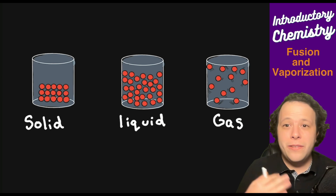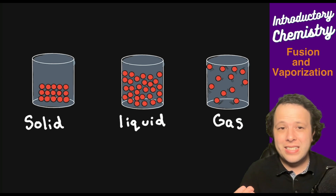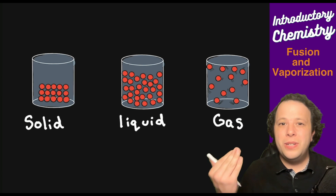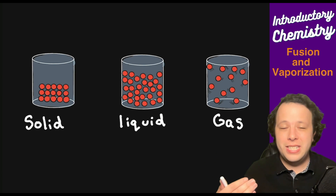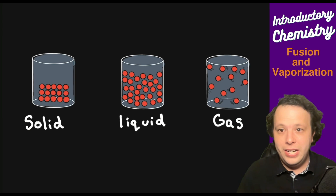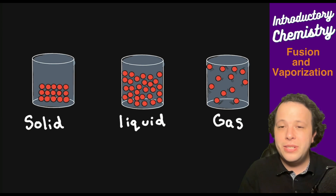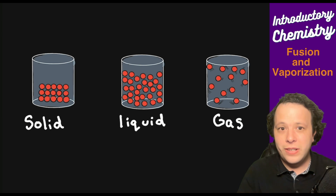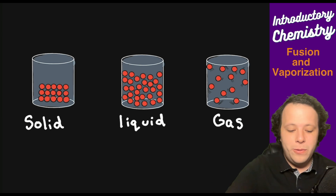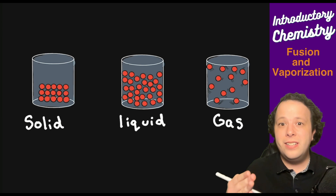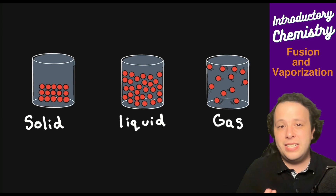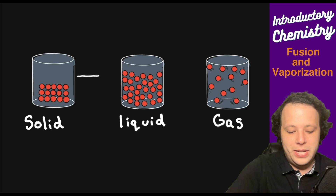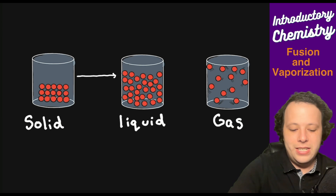Let's start with the fundamentals. A change of state and a phase change are used interchangeably depending on your professor. When we talk about phases, we have solid, liquid, or gas. Going from a solid to a liquid — for example, an ice cube — is melting.